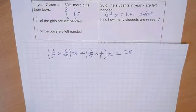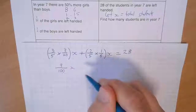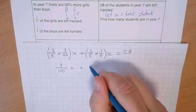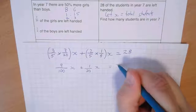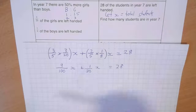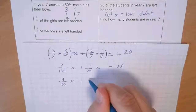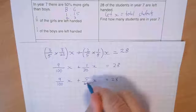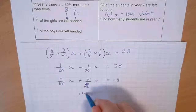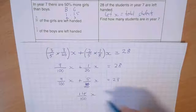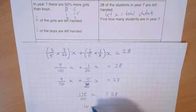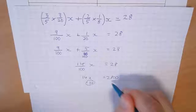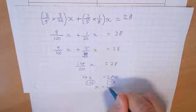Working this out: 9/100 x plus 2/40 x, which simplifies to 9/100 x plus 1/20 x. Getting a common denominator: 9/100 x plus 5/100 x equals 28. So 14/100 x equals 28, meaning x equals 200 students altogether.